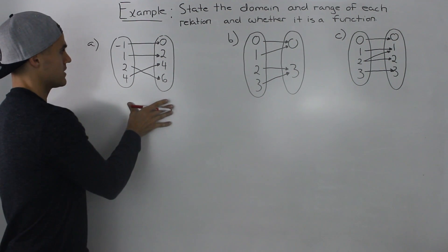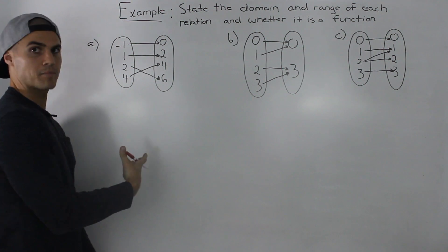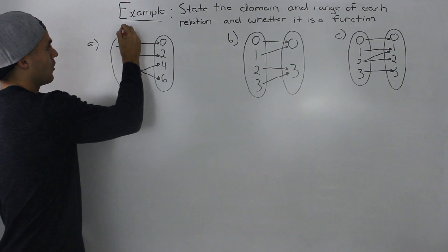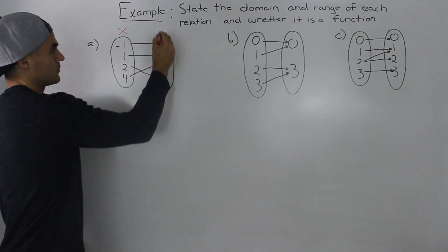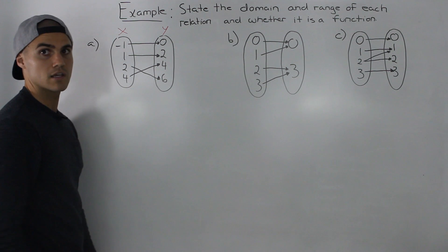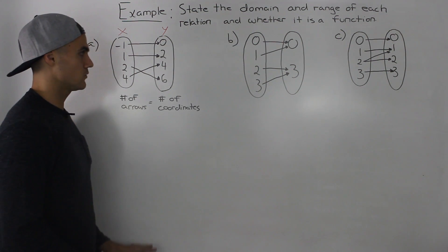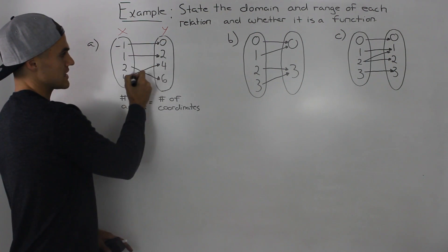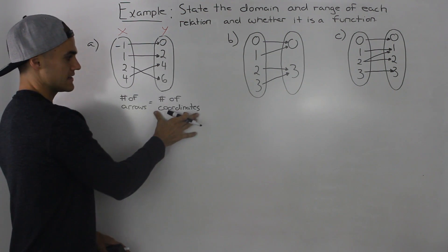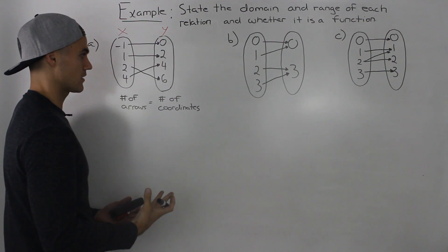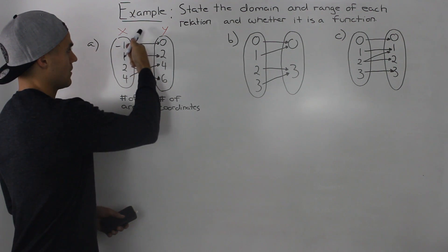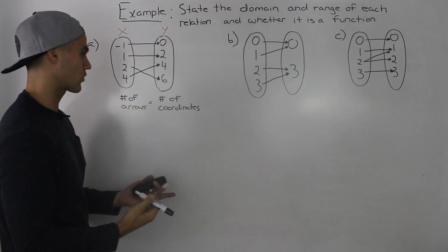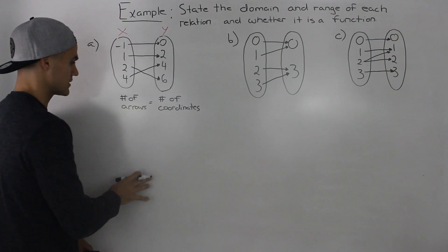Let's start off with part A. To review mapping diagrams, the first column on the left always represents the x values, and the column on the right represents the y values. The trick when dealing with mapping diagrams is to remember that the number of arrows you see is the number of coordinates you're going to be dealing with. Notice here how in this mapping diagram there are four arrows, meaning there's going to be four coordinates. You can actually write the coordinates out in a list.